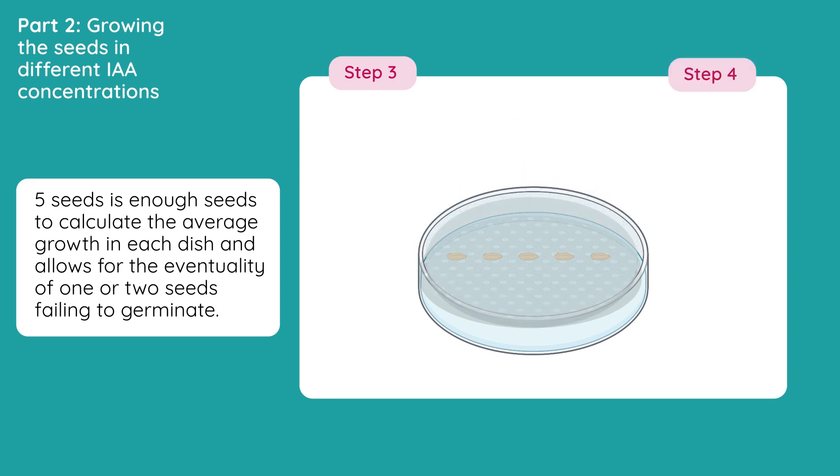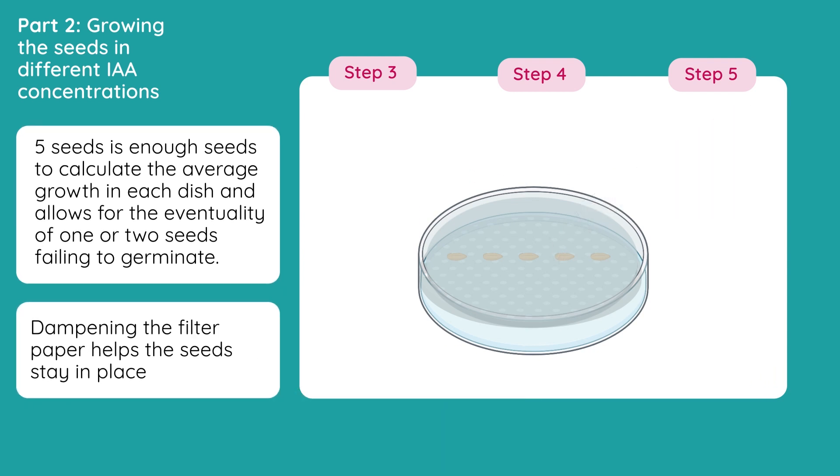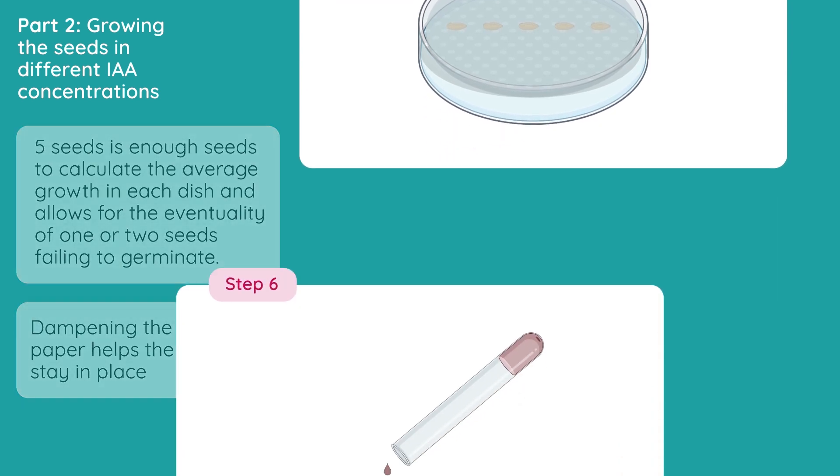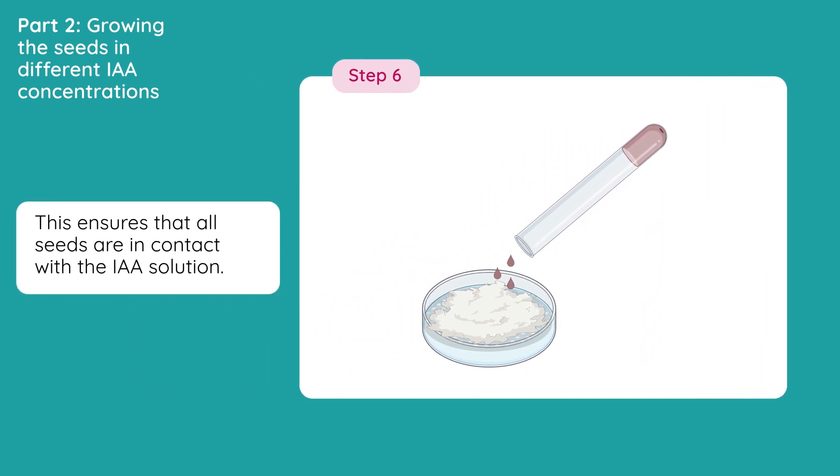Cover the seeds with filter paper, and then add 2 centimeters cubed of IAA solution from each test tube to the filter paper in the matching petri dish. Dampening the filter paper helps the seeds stay in place. Cover the filter paper with cotton wool, and pour the remaining solution on the cotton wool. This ensures that all seeds are in contact with the IAA solution.